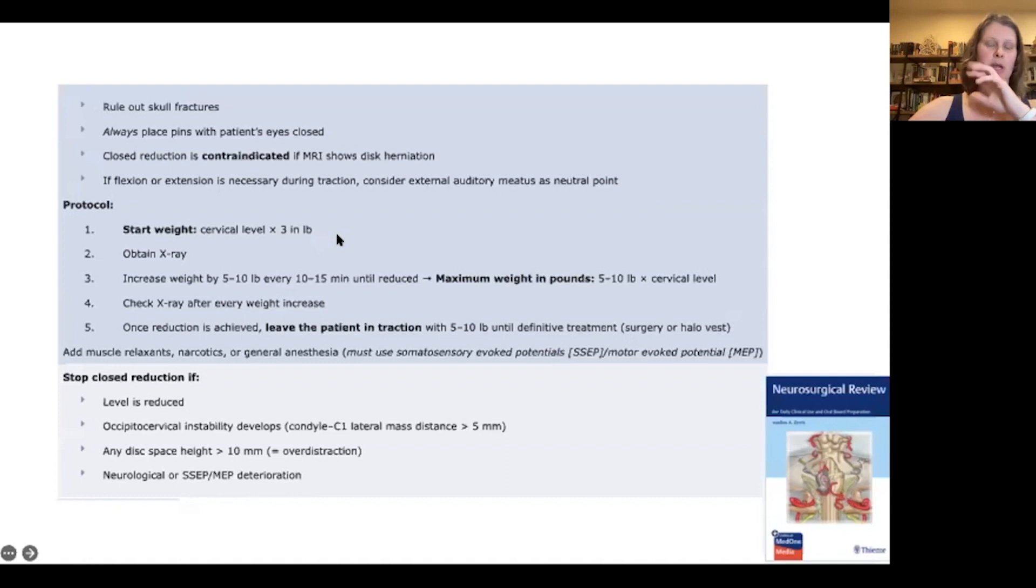Depending on the type of fracture, you either want to pull the patient in axial traction and flexion or axial traction and extension. You actually do that relevant to the external auditory meatus. If you want to do traction and extension, you put a little bit anterior to the external auditory meatus so they lift their chin up. If you want extension, you put it a little bit behind the external auditory meatus to put the chin down.